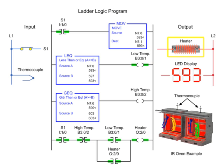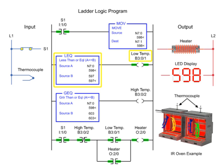The heater remains on as long as the low temp output is true and the high temp output is false. As the temperature rises above source B of the less than or equal to instruction, low temp turns off and heating continues.